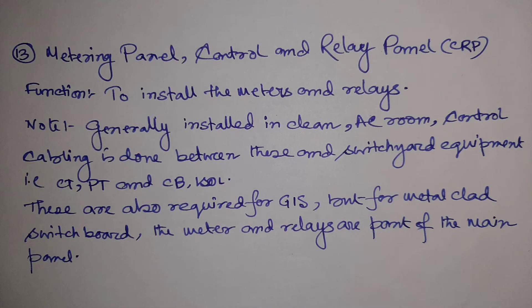The next equipment is the metering panel and the Control and Relay Panel, also known as the CRP. As the name suggests, it is used to install meters and relays. These are installed in a clean, air-conditioned room, and control cabling is done between the CRP and the metering panel and the switchyard equipment such as current transformers, PTs, circuit breakers, and isolators.